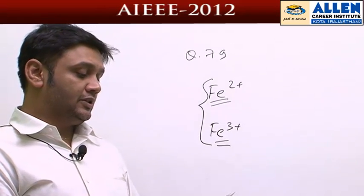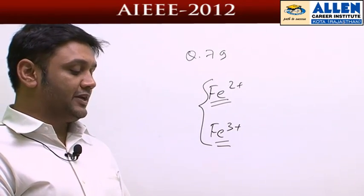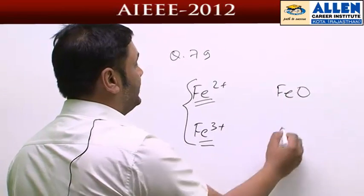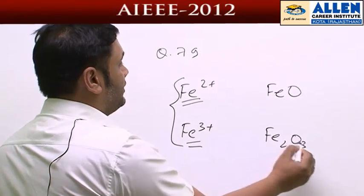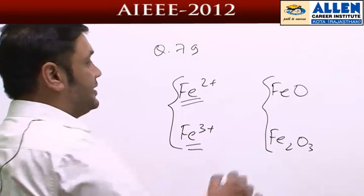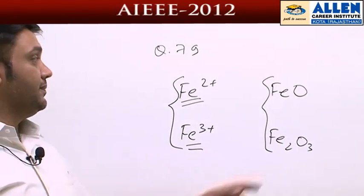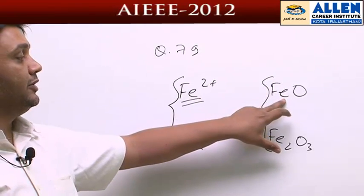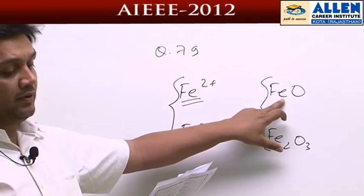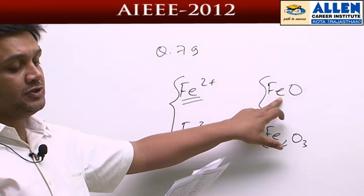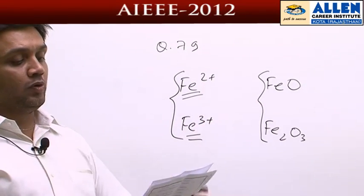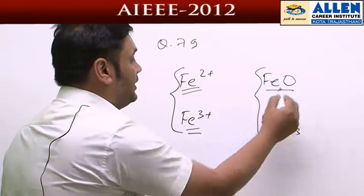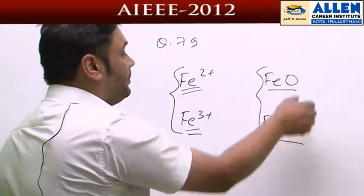The second option says ferrous oxide is more basic in nature. If you see ferrous oxide is FeO and ferric is Fe2O3, then we know that with the increase in oxidation state from ferrous to ferric, the oxide becomes less basic. This option seems to be correct because ferrous oxide and ferric oxide, if you compare them, ferric is more towards acidic.